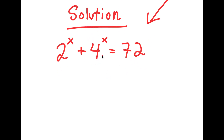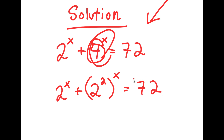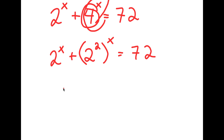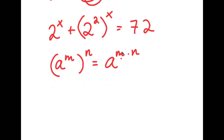The first thing I'm going to do is rewrite 4 to the power of x as 2 squared to the power of x. So all I did was rewrite 4 as 2 squared. Now I have 2 to the power of x plus 2 squared to the power of x is equal to 72. Using the rule that a to the power of m to the power of n equals a to the power of m times n, I get 2 to the power of 2x.